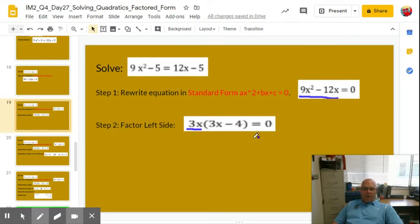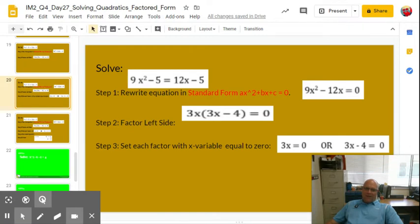Alright, so now we have this. We should know what to do. What's the next step? Our next step is we're going to take each factor that has the x variable. In this case, there's two factors: 3x and 3x - 4. We're going to set both of those equal to zero. So we go 3x = 0, that's one equation. The other equation is 3x - 4 = 0.